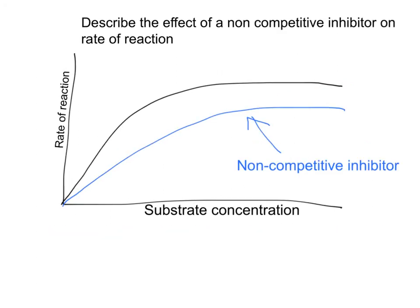Describe the effect of a non-competitive inhibitor on the rate of reaction. You can see that if you add a non-competitive inhibitor to an enzyme-controlled reaction, initially as you increase the substrate concentration there is a slight increase in the rate of reaction, but the presence of the non-competitive inhibitor means it levels off at a lower maximum rate than in the absence of the inhibitor.